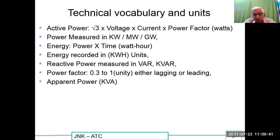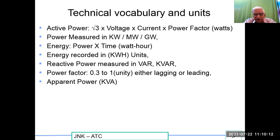Energy recorded is in kilowatt-hours, generally called units, and the units are mentioned in your electricity bill. Reactive power is measured in volt-amperes reactive (VAR), also in kVAR. Power factor is somewhere between 0.3 to unity, mostly lagging. When you connect power factor improvement capacitors it goes leading, but our aim is always to retain it around 0.95, plus or minus. Apparent power is measured in kVA, and transformers are always rated in apparent power.